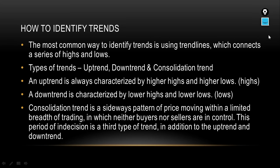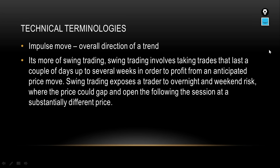I've just explained the types of trends. Now we're going to move on to technical terminologies. As a forex trader, you're going to have to learn the terminologies traders use to explain the market. First, we'll start with what is an impulse move. An impulse move is the overall direction of a trend — in a buy trend the impulse move is a buy, and in a sell trend the impulse move is a sell.